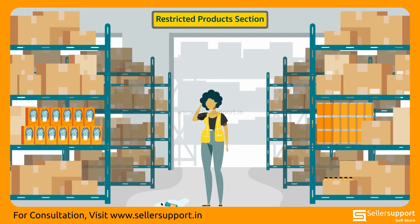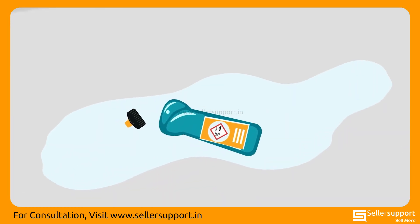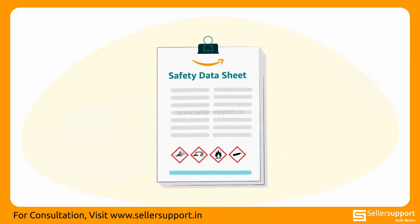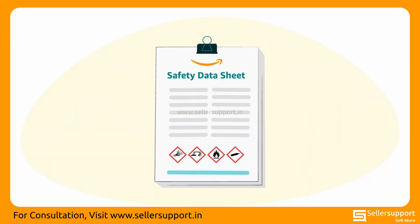Sam has dropped the bottle and it has spilled on the floor. Sam looks on the bottle and sees it has a corrosive pictogram displayed on it and the information available on Amazon systems.